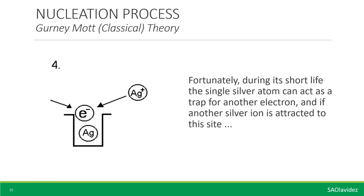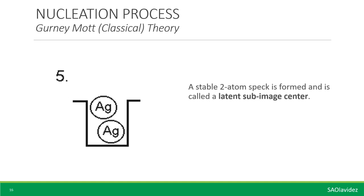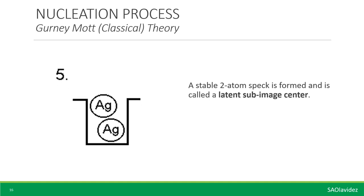Fortunately, during its short life, the single silver atom can act as a trap for another electron. If another silver ion is attracted to this site, then a stable two-atom speck is formed, which is called the latent sub-image center. These two atoms will no longer dissociate.